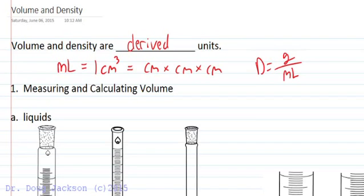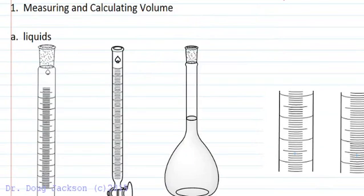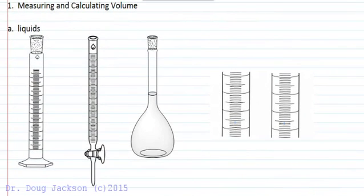Let's talk about volume first. In our lab, we will have three different methods for measuring volume of liquids. The first would be a graduated cylinder, the second is a burette for titrations, and the third is the most accurate, a volumetric flask.